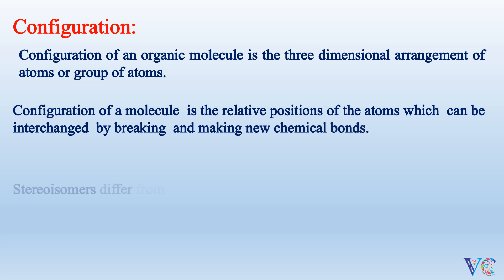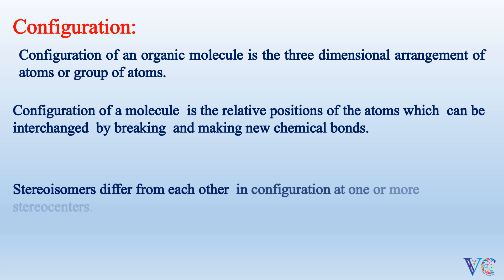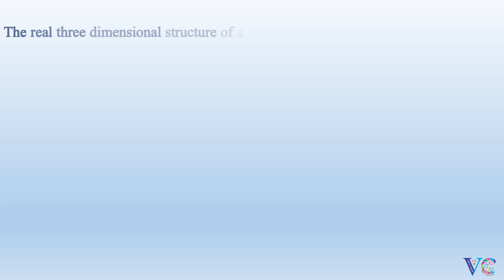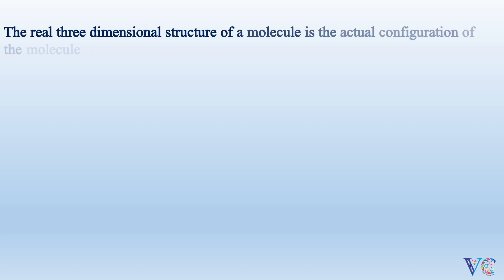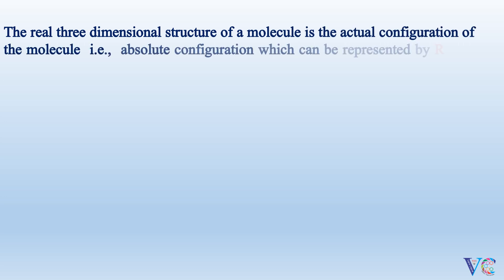Stereoisomers differ from each other in the configuration at one or more stereocenters. The real three-dimensional structure of a molecule is the actual configuration of the molecule — that is, absolute configuration — which can be represented by either R or S notation.